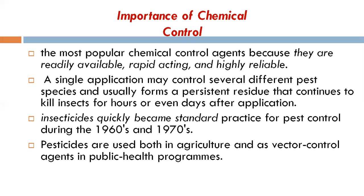Conventional insecticides are among the most popular chemical control agents because they are readily available in the market, have a rapid killing action, and are highly reliable. Even a single application can give control of several different pest species. They usually form a persistent residue that continues to kill insects for hours, many days, or even many years after application — this residue remaining on treated plants or other commodities is called a persistent pesticide deposit.